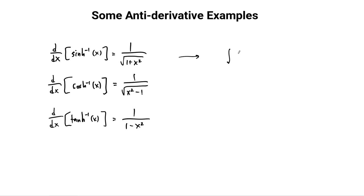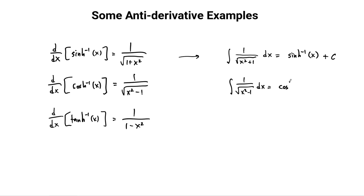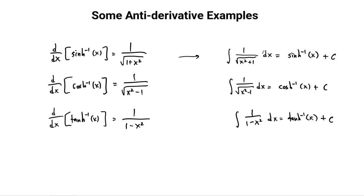So antiderivatives. What we learn when we compute these derivatives is that the antiderivative of 1 over the square root of x squared plus 1 dx ends up being the inverse sinh function plus c. Similarly, the antiderivative of 1 over the square root of x squared minus 1 dx is going to be inverse cosh of x plus c. And the antiderivative of 1 over 1 minus x squared dx is then the arctanh function, tangent hyperbolic inverse plus c.